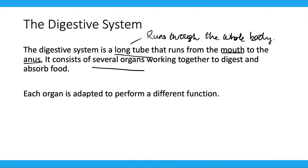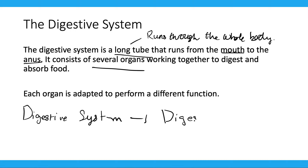So the function of the digestive system is to digest and absorb food. And each organ is adapted to perform a different function, which we're going to have a look at later in this video.